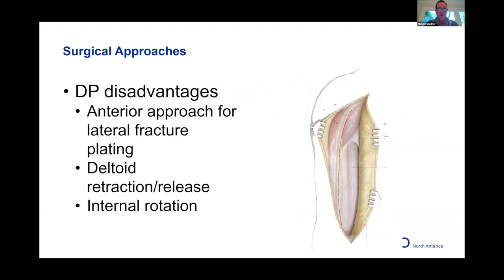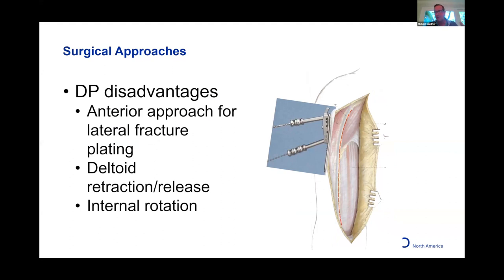This is a laterally-placed plate for lateral fracture pathology, so to get around the deltoid we often need to vigorously retract it — with the axillary nerve running right underneath — and often need to internally rotate the arm to expose the plating footprint. This internal rotation can shift our reduction when we have somewhat tenuous provisional K-wires.